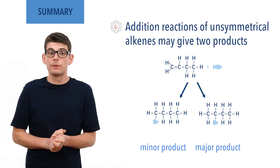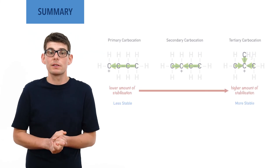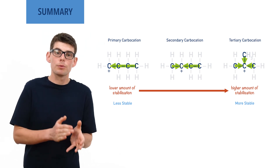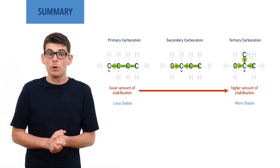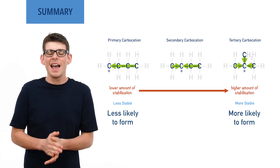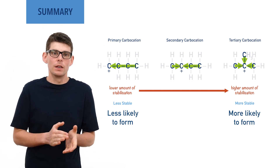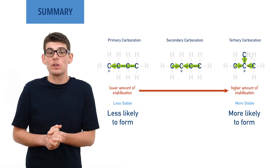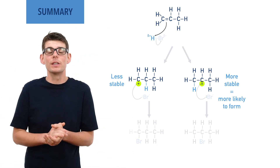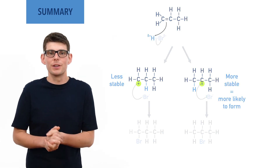Due to the positive inductive effect of carbon groups bonded to a positively charged carbon, tertiary carbocations are more stable than secondary carbocations and secondary carbocations are more stable than primary carbocations. This means, if possible, a tertiary carbocation is more likely to form than a secondary carbocation and a secondary carbocation is more likely to form than a primary carbocation in a reaction. As the end position of the halogen in the product is determined by the position of the carbon in the intermediate, secondary and tertiary halogenoalkanes are more likely to form if possible than primary halogenoalkanes.